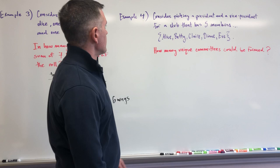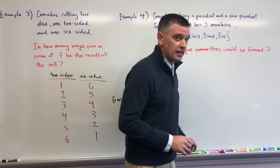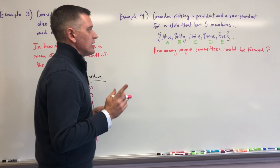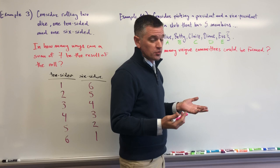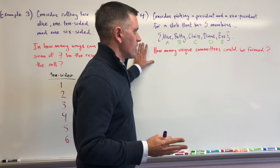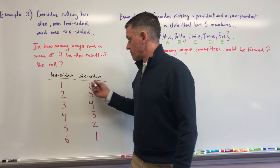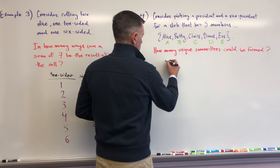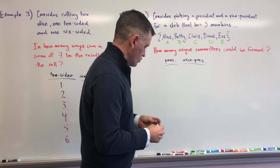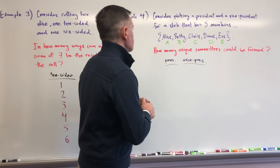For example four, we're going to be picking a president and vice president for a club that has five members, advantageously named Alice, Betty, Claire, Diane, and Eve. We need to think about how many unique committees could be formed with a president and vice president for this club. This is going to be a situation where we need to think about two things: repetition and order. I could create a list of possible presidents and then possible VPs.